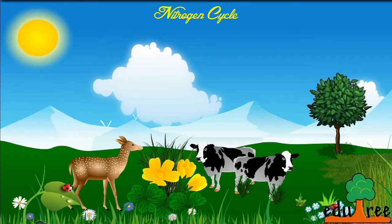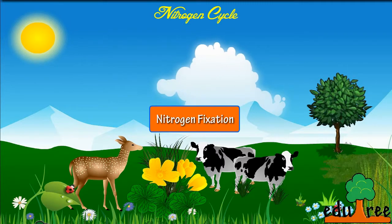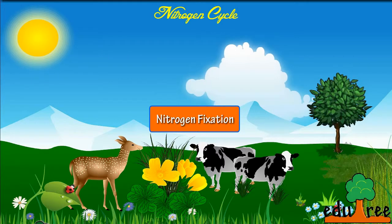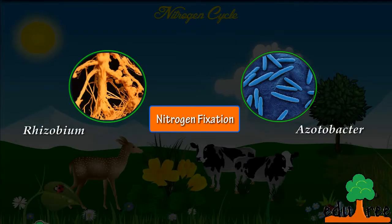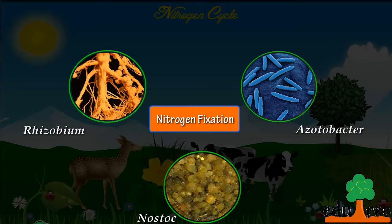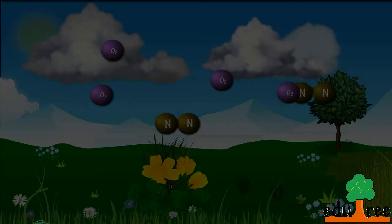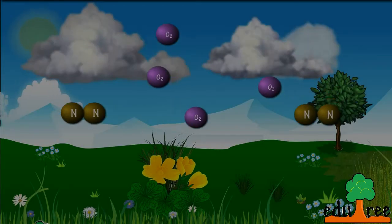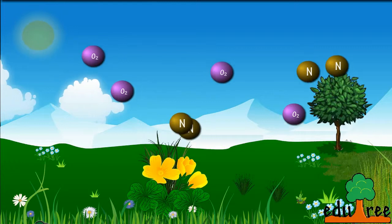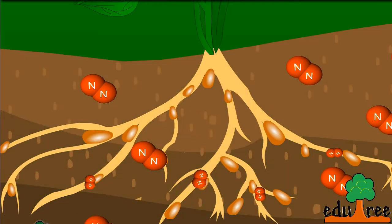The very first step of the nitrogen cycle is nitrogen fixation. During biological nitrogen fixation, nitrogen-fixing bacteria such as Azotobacter, Rhizobium, and blue-green algae like Nostoc convert gaseous nitrogen to ammonia and nitrates. During nitrogen fixation, nitrogen is also oxidized to oxides by lightning, and these oxides get dissolved in rainwater and precipitated. Plants obtain nitrogen from either the soil or the air.